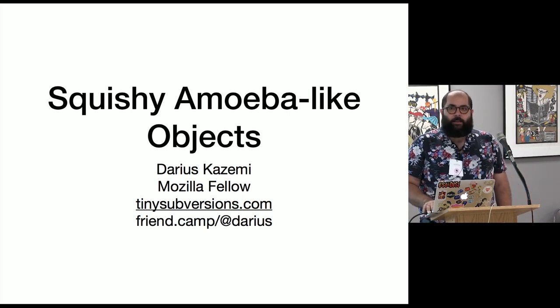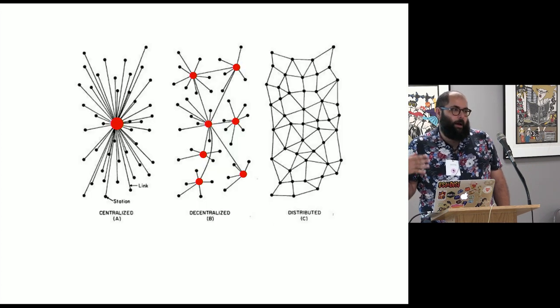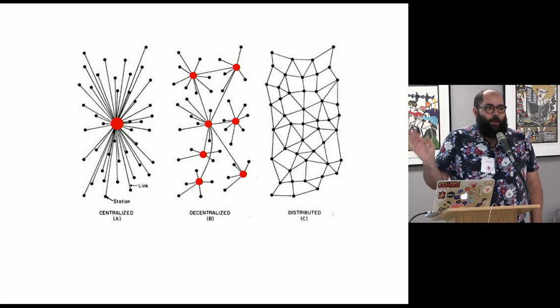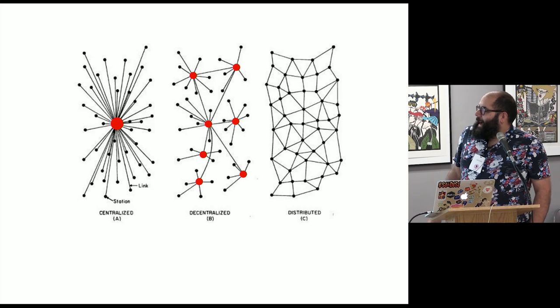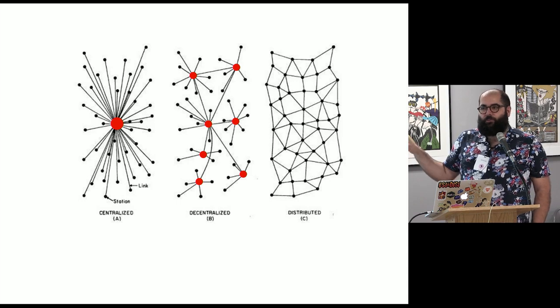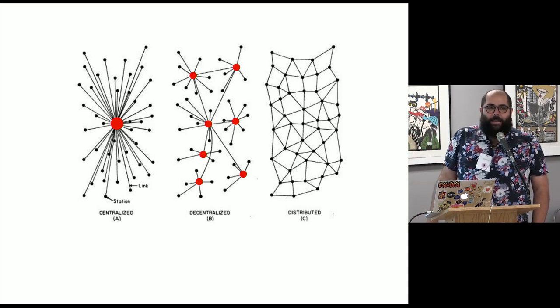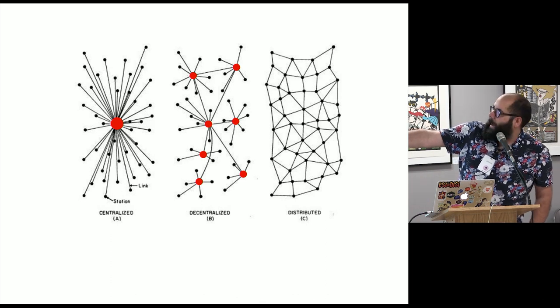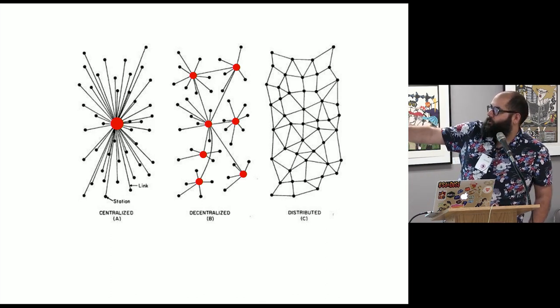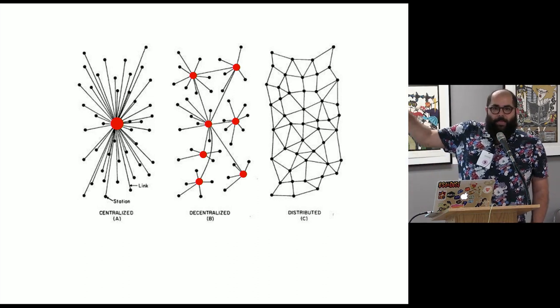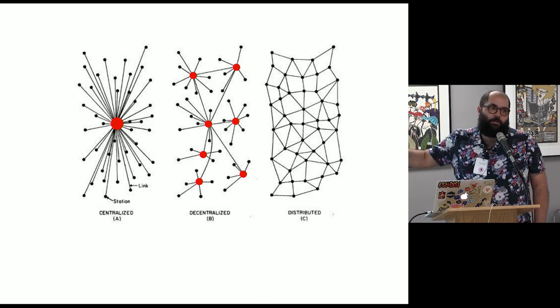So first off, just to define some terms, the decentralized web. I'm going to talk about it a lot here and this is kind of a classic diagram that I have added red circles to. And just very briefly, a centralized network is where there's one source of truth at the middle. Everybody connects to it and it handles all of the messaging and making sure that people, if I'm on the bottom of that blob and I want to talk to someone on the top of that blob, I have to go straight through that big red circle and everybody has to do that.